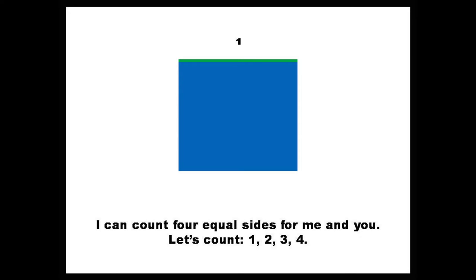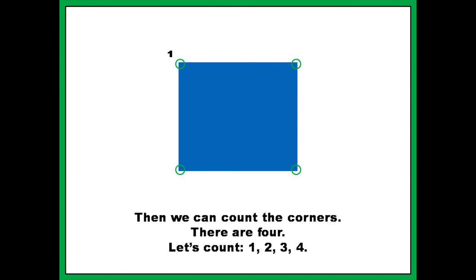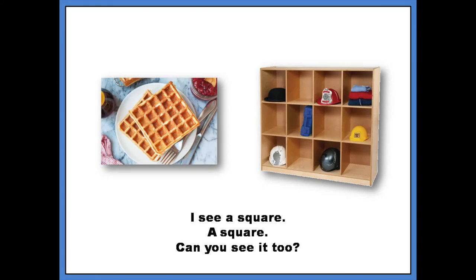Let's count: one, two, three, four. Then we can count the corners — there are four. Let's count: one, two, three, four.